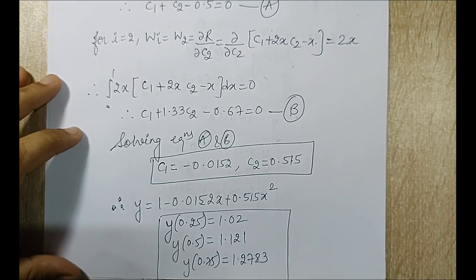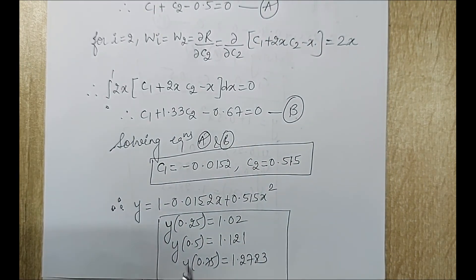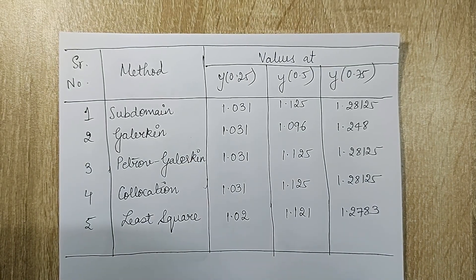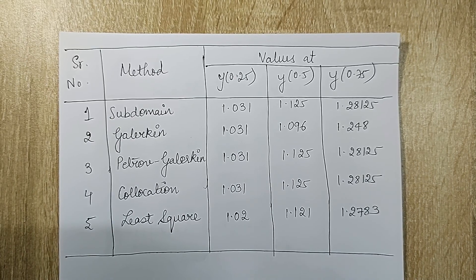These are the values obtained by all five methods, which I have now tabulated. With this I end the session. I hope you have understood the lecture — if you have any doubts, please write to me in the comment section. See you in the next session with another numerical. Thank you.